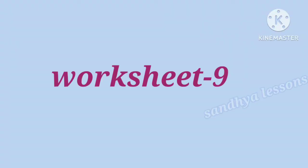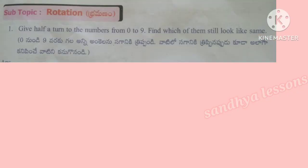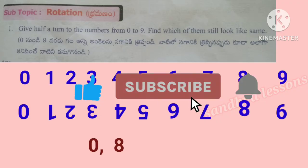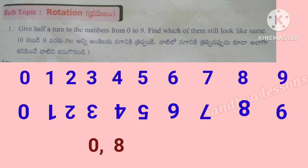Worksheet 9. First problem: Give half a turn to the numbers from 0 to 9. Find which of them still look the same. If we half-turn the numbers 0 to 9, the numbers which look the same are 0 and 8.